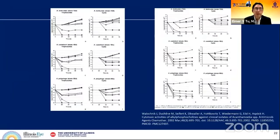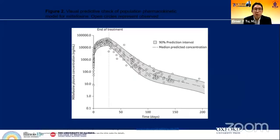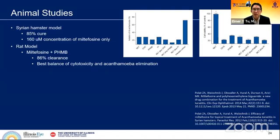In early laboratory studies, among several alkylphosphocholines tested, miltefosine (APC1) was the most effective, showing the greatest kill rate. Graphs with different acanthamoeba strains demonstrated that it is concentration-dependent, with 160 micrograms per milliliter being the key concentration. Miltefosine has an extremely long half-life — after one month of treatment, levels can still be found five months later. Animal studies in a Syrian hamster model showed that 160 micromolar concentration resulted in 85% cure, and combining it with PHMB heightened the level of acanthamoeba clearance.